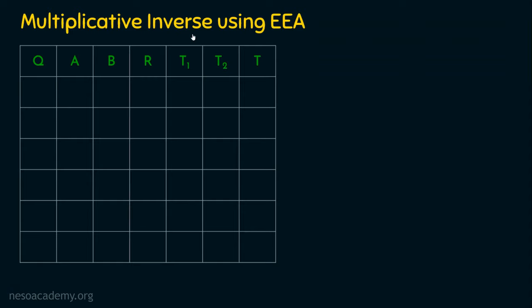We are here to find the multiplicative inverse using extended Euclidean algorithm. I'm going to explain this in the tabular column approach. Just recollect the lecture on finding GCD method 1. In method 1, what four columns did we have? The first column is the quotient, then A, B, and the remainder. We had only these four columns when we solved problems using the Euclidean algorithm — method 1 of Euclidean algorithm.